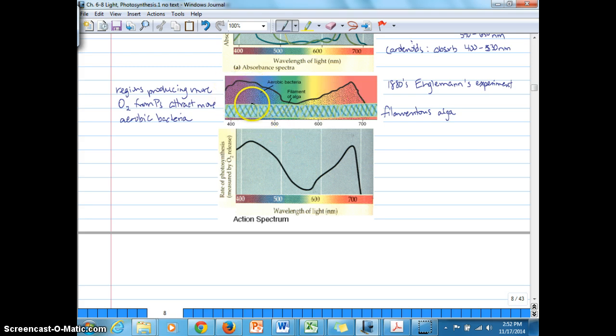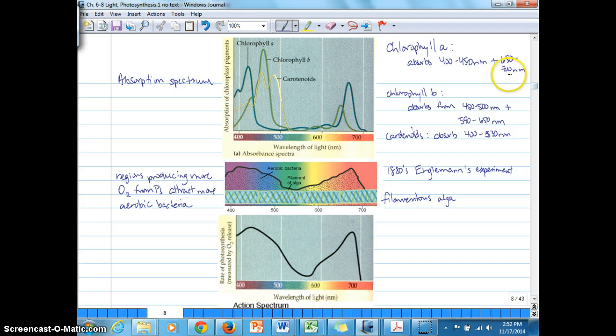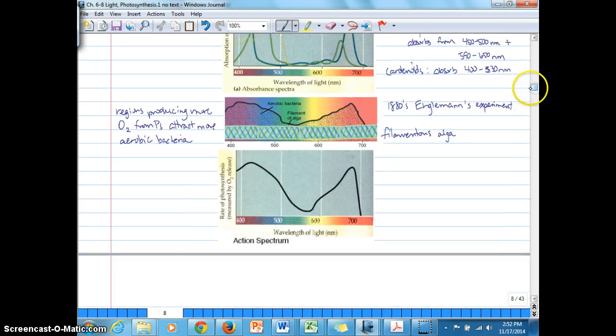And so what it suggests is that the regions producing more oxygen as a result of photosynthesis attract more aerobic bacteria. And we can see a correlation with the congregation of bacteria with the wavelength of light. So it suggests that there's more photosynthesis happening in the blue-indigo-violet region and in the red-orange region where these pigments tend to primarily absorb light.